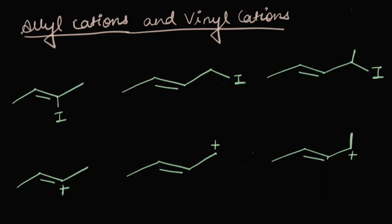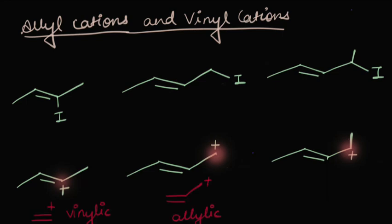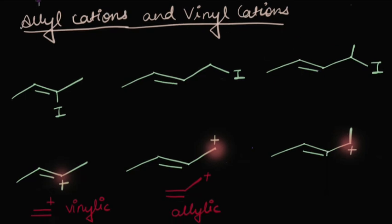Looking carefully at these cations, the doubly bonded carbon has a positive charge in one case, while the carbon next to the doubly bonded carbon has a positive charge in the other two cases. So the first one is a vinylic cation — a positive charge lying on a double bonded carbon — and the other two are allylic cations, where the positive charge resides on a carbon atom adjacent to the double bond.